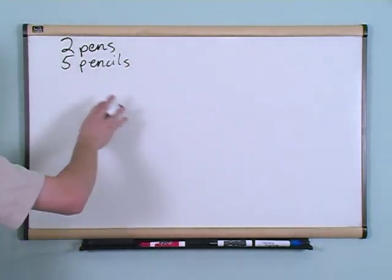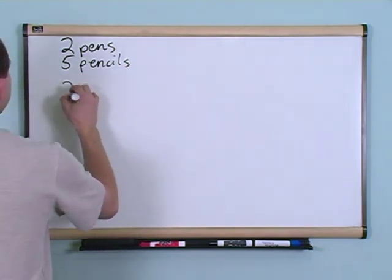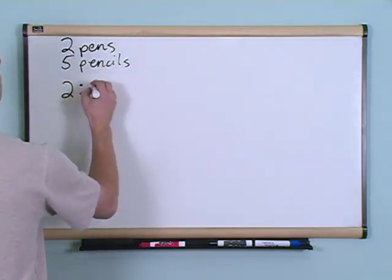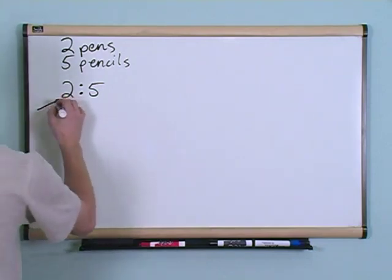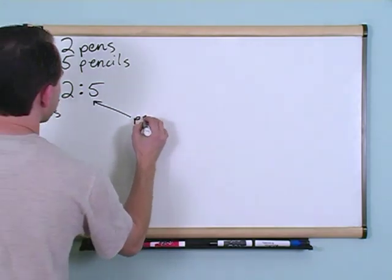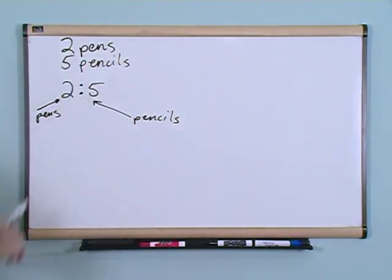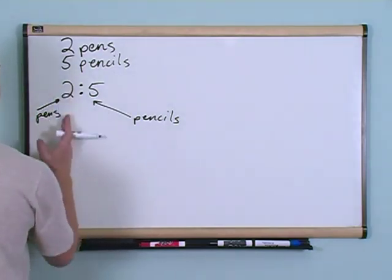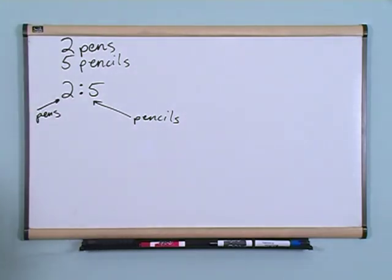The way you write this down, and I know you don't quite understand this just yet, we'll get there, you say you have two colon five. What this means is this is the number of pens and this is the number of pencils. So it's really nothing special. You just put this symbol in the middle, it's a colon. And then basically all it means is this many pens corresponding to this many pencils. That's all it means.